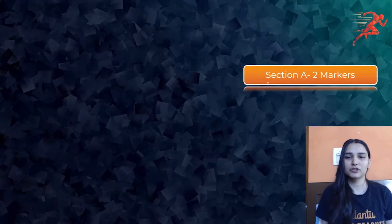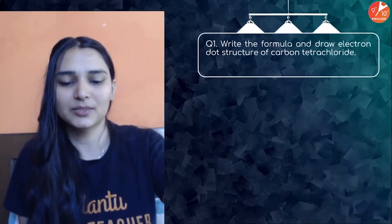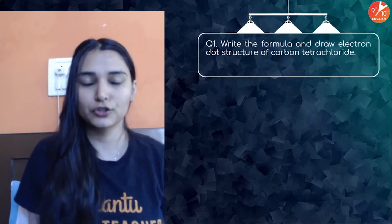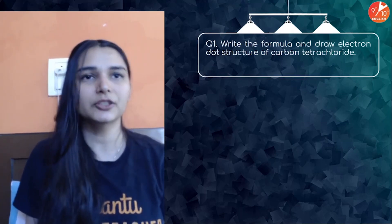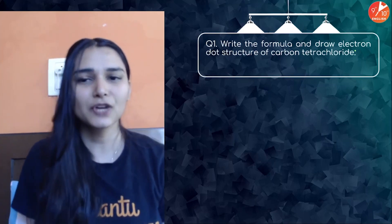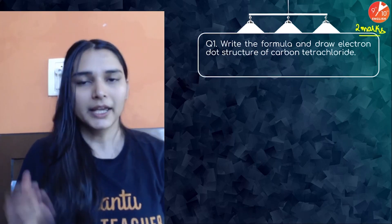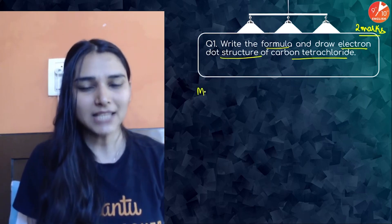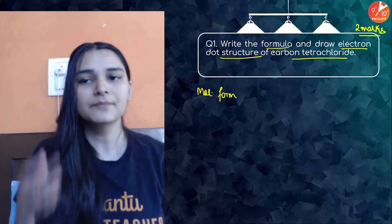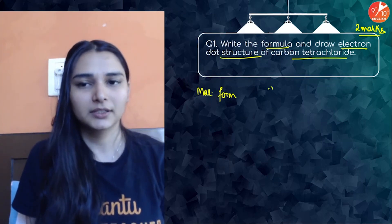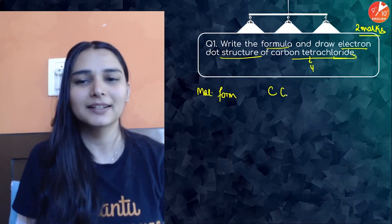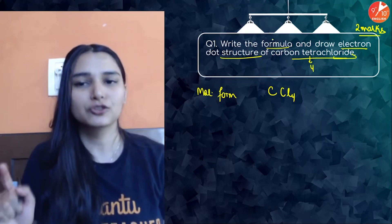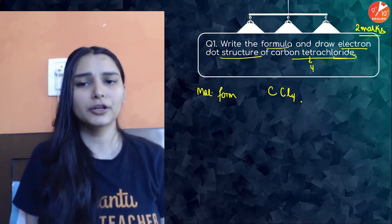Let's get started with Section A of chemistry — the two-mark questions expected in the exam. The first question: write the formula and draw the electron dot structure of carbon tetrachloride. According to the marks, always frame your answer properly. Start with the molecular formula — 'carbon tetra' means four, 'chloride' means Cl, so carbon tetrachloride is CCl4.